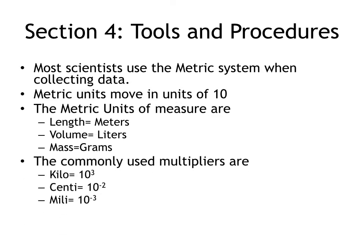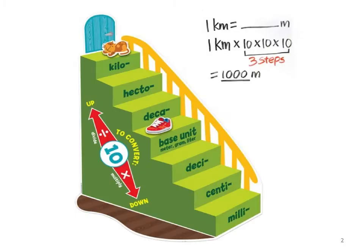The multipliers are: kilo is times 10 to the third, centi is 10 to the negative 2, and milli is 10 to the negative 3. That might be a little confusing, so I've found a children's conversion table — it's very childish, but it does the job.